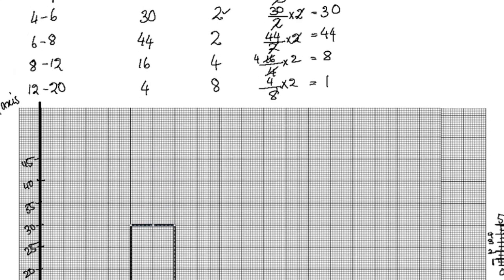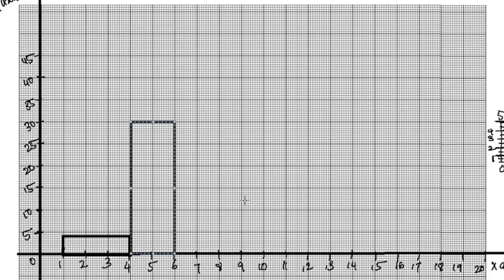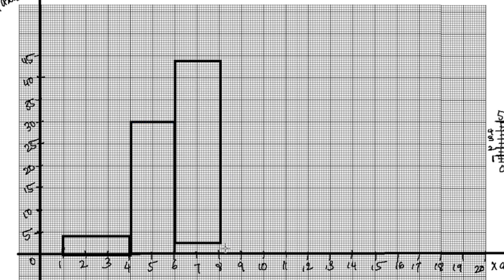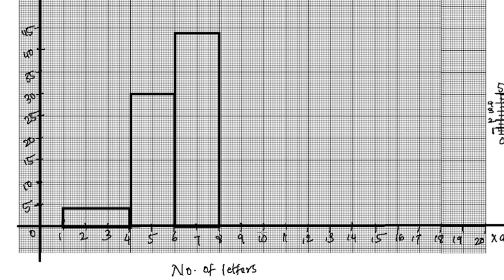The next interval is 6 to 8 with adjusted frequency 44. We draw that bar starting at 6 and ending at 8, reaching up to 44 — nearly 45 on the y-axis. The next interval is 8 to 12 with adjusted frequency 8, so the bar height is 8.